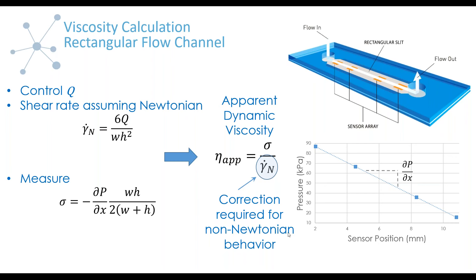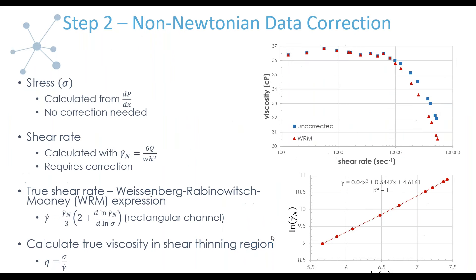So step two in the process: once you've collected your data, and if you're dealing with concentrated macromolecules, quite likely you're going to have non-Newtonian behavior and you'll want to correct the data. The stress that comes from the software doesn't require a correction — we've made no assumptions about the nature of the fluid, just calculated from the pressure gradient along the flow channel. The shear rate, however, had the Newtonian assumption and we have to correct this.